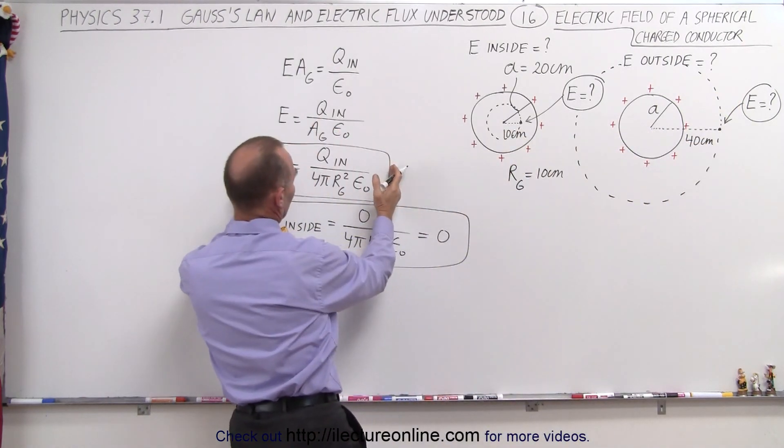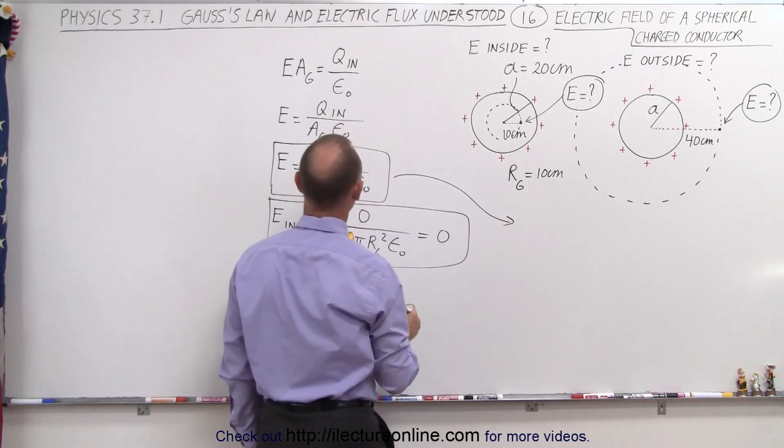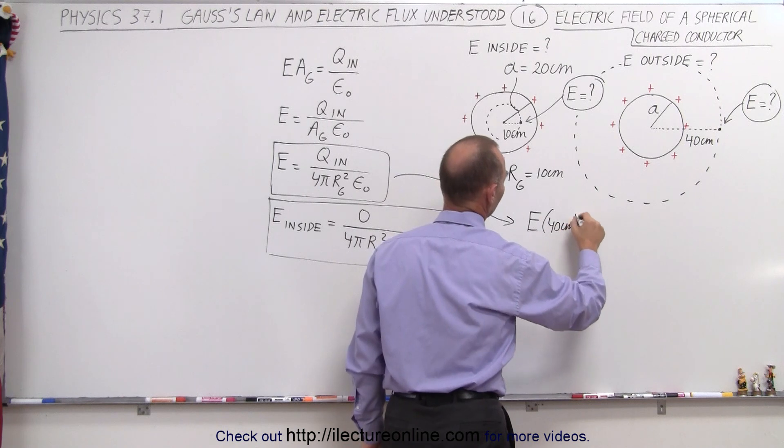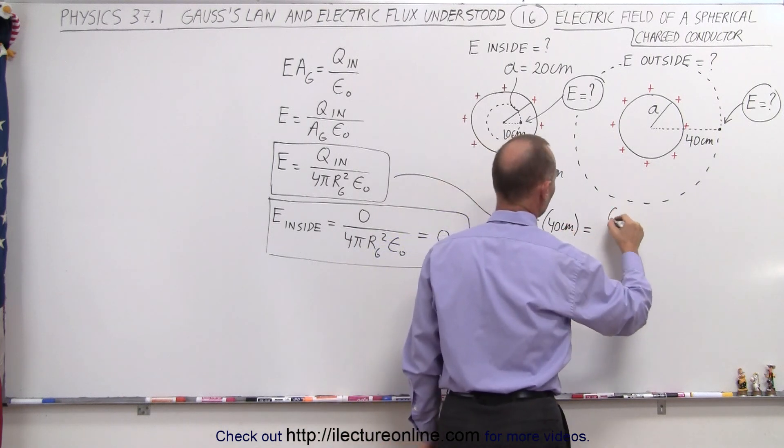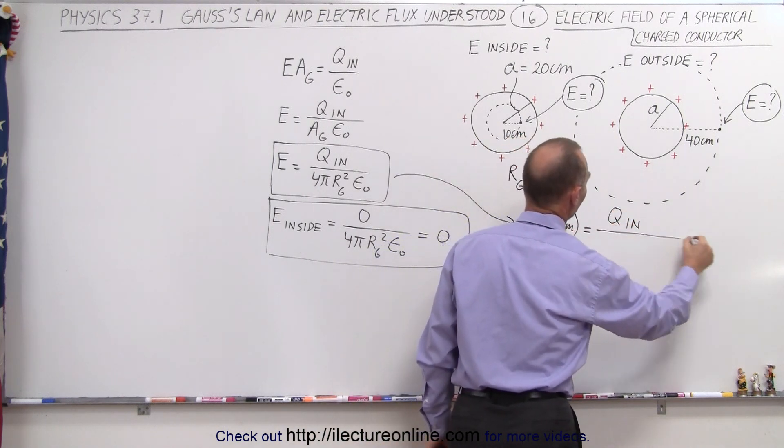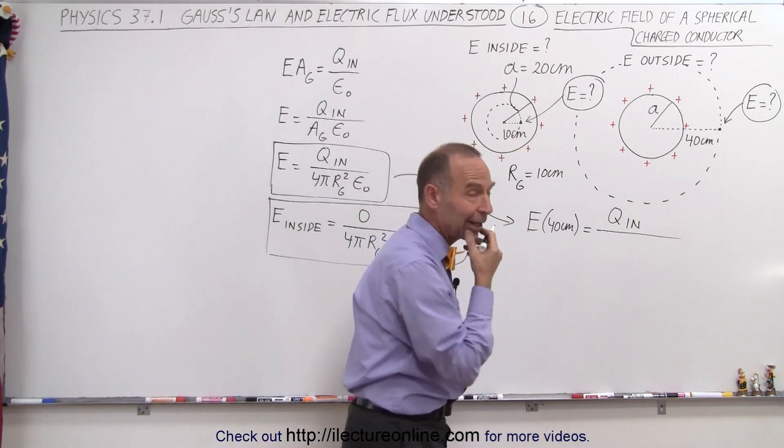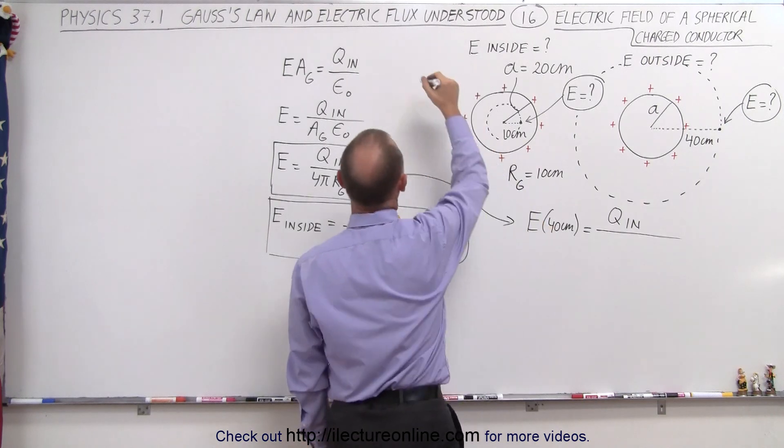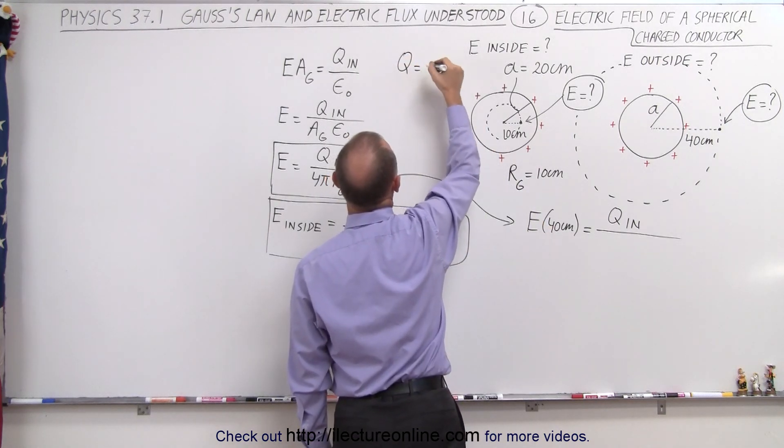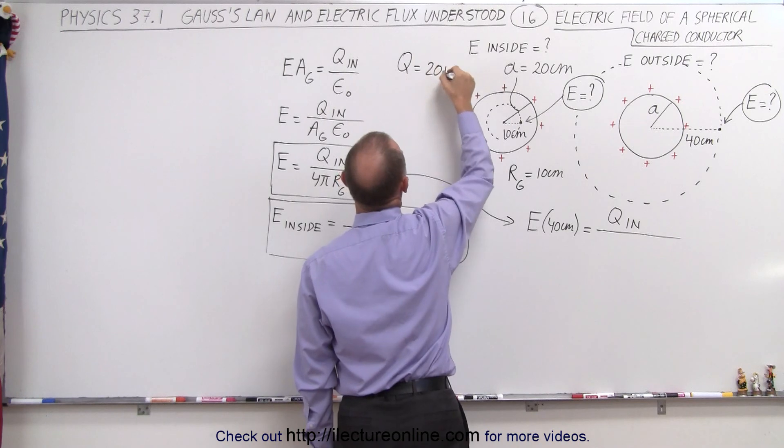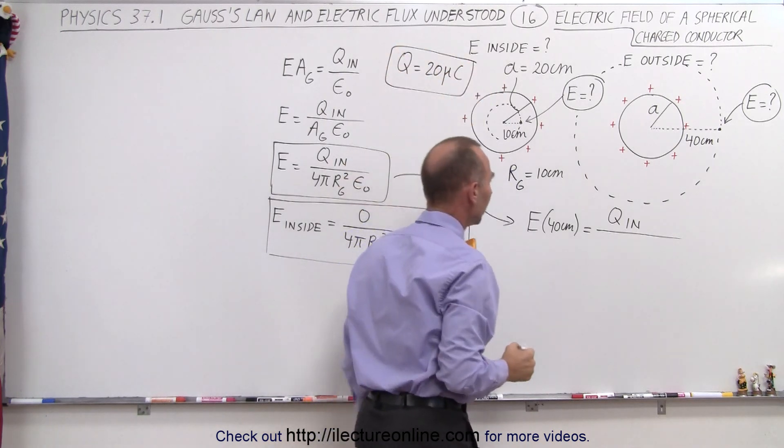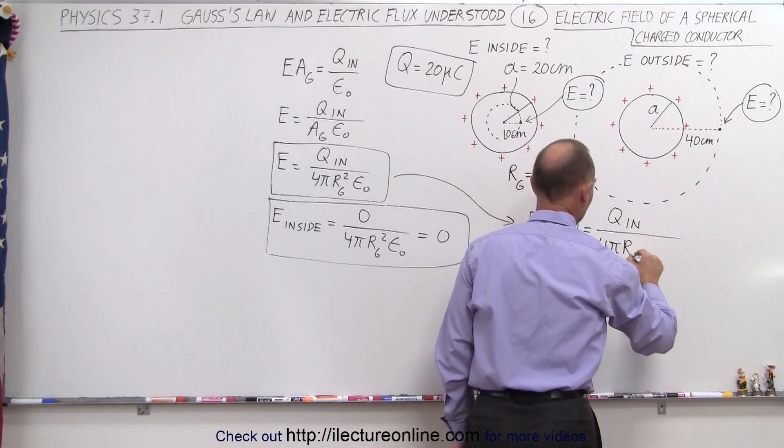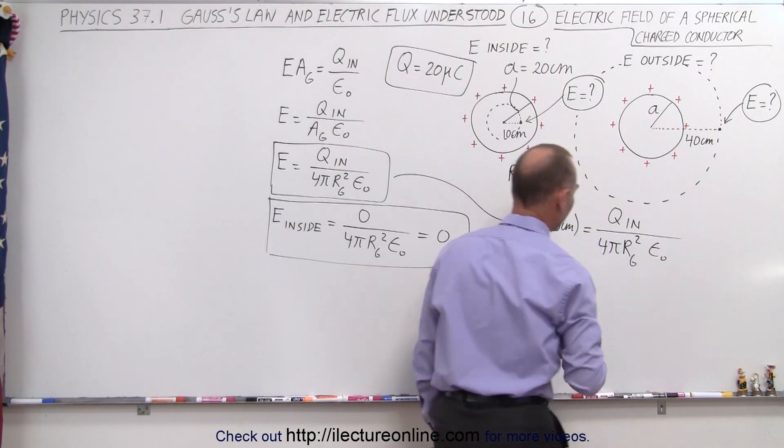We use the very same equation as we did before, so we'll bring that over here. The electric field at 40 centimeters is equal to Q inside divided by, and I don't think I noted how much charge I have on the sphere, so let's come up with something. So Q on the sphere is going to be equal to, let's say, 20 microcoulombs.